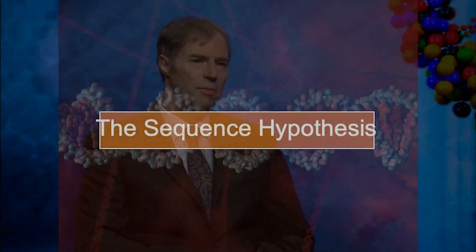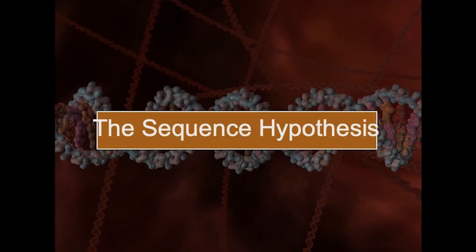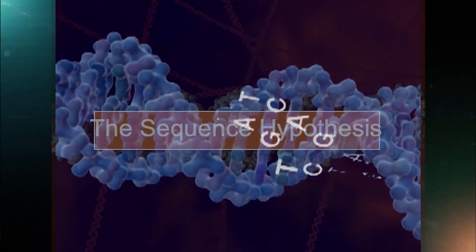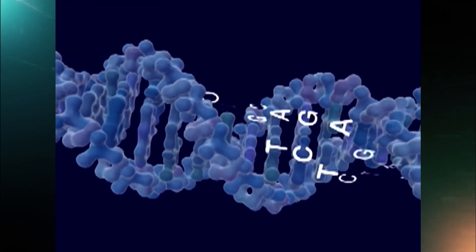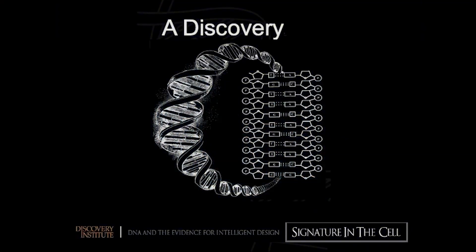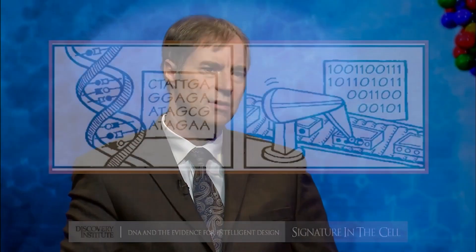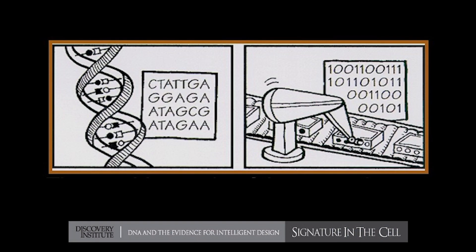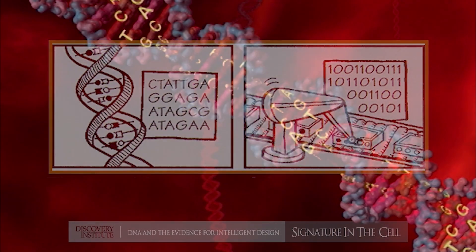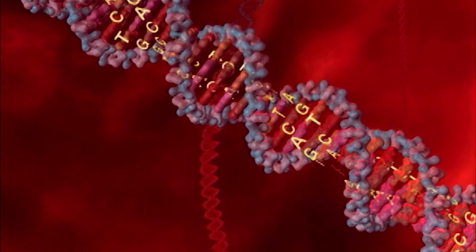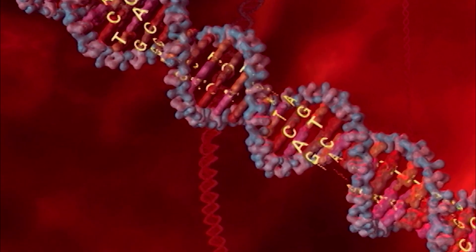Five years later, Francis Crick formulated something known as the sequence hypothesis. That was the idea that along the spine of the DNA molecule, along the interior of that double helix, there are chemical subunits known as bases or nucleotide bases. Crick postulated that those nucleotide bases are functioning like alphabetic characters in a written text, digital characters, like zeros and ones in a section of machine code. Chemists today identify those four digital characters in DNA with the letters A, C, G, and T.